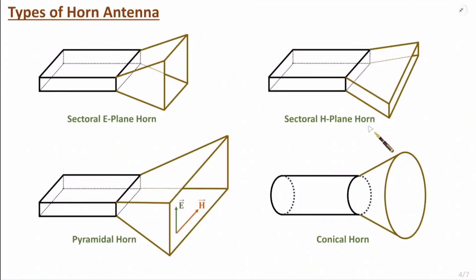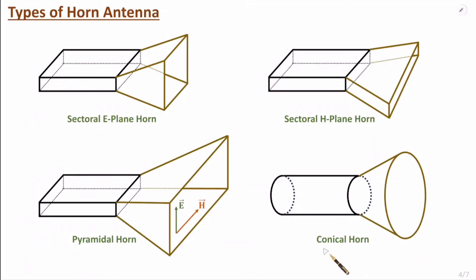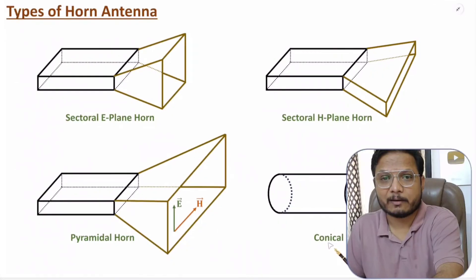The last category is the conical horn antenna, which uses a cylindrical waveguide with flaring. Those are the different types of horn antennas.